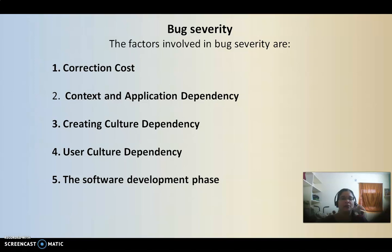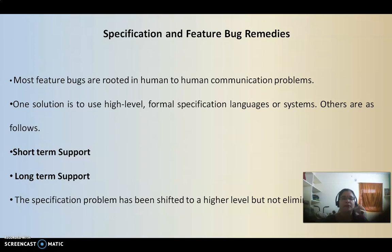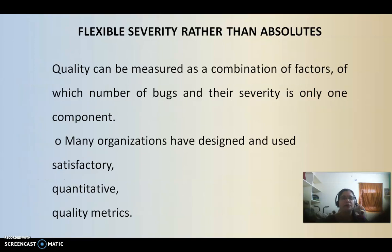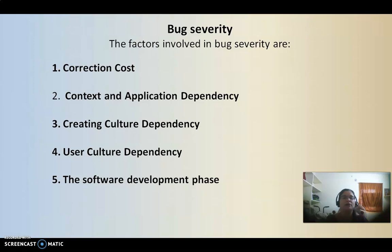So we have seen requirements and specification bugs, feature bugs, feature interaction bugs, remedies for feature and specification bugs, flexible severity versus absolute severity, how quality can be achieved, and the various factors that affect bug severity. In the coming videos, we will see more about software testing methodologies. Thank you.